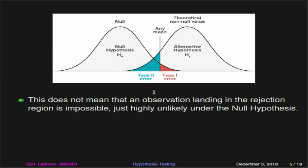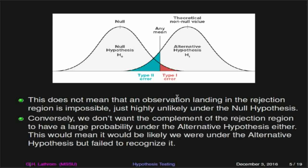Unlikely really means we're not going to see it very much, but in fact it will absolutely positively happen. That's key to understanding a lot of the statistics we're talking about. Conversely, we want the complement of the rejection region to have a small probability under the alternative hypothesis as well. So it would be really likely for us to be under the alternative hypothesis and be outside the rejection region — meaning we'd think we were right in failing to reject the null hypothesis when in fact we were operating under the alternative. So we really want beta to be a small value.